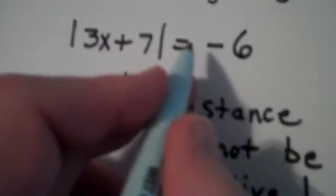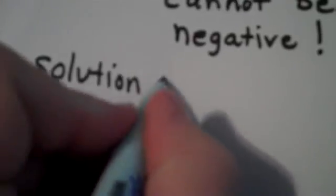Absolute value equaling negative 6 is not possible. Therefore, this is a very easy problem to do. Your solution set is the empty set. And we're done.